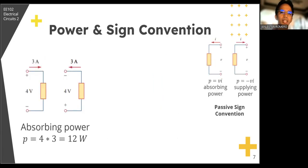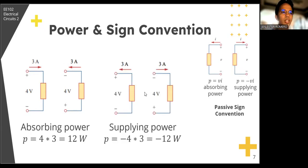Passive sign convention is satisfied when the current enters through the positive terminal of an element and p is equal to positive vi. If the current enters through the negative terminal, then the power is equal to negative vi. Let's apply that in this example. The element in both of these circuits is absorbing positive 12 watts because this current enters the positive terminal. That's why the power is equal to vi. That is, v is 4, i is 3, hence 12 watts. Another one. Both of these circuits, the power is negative 12 watts. This is because current enters through the negative terminal. Hence, p is equal to negative vi, negative 4 times 3, equal to negative 12. So take note to apply the passive sign convention for this.